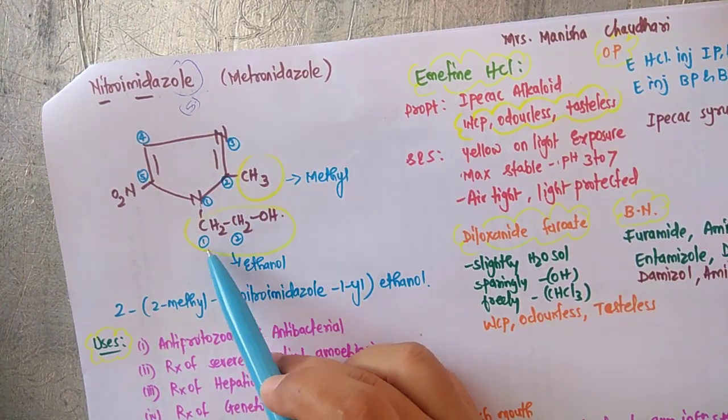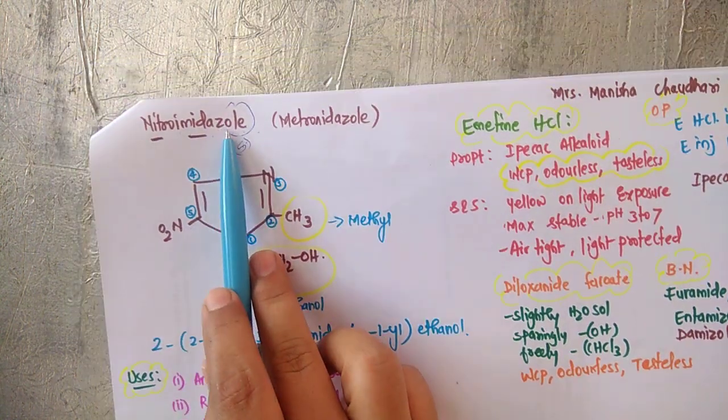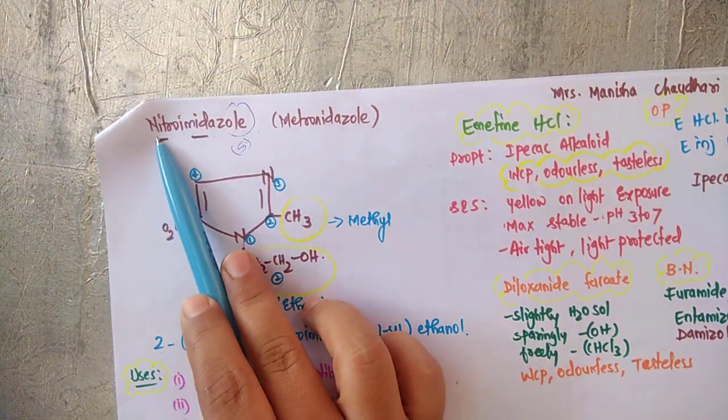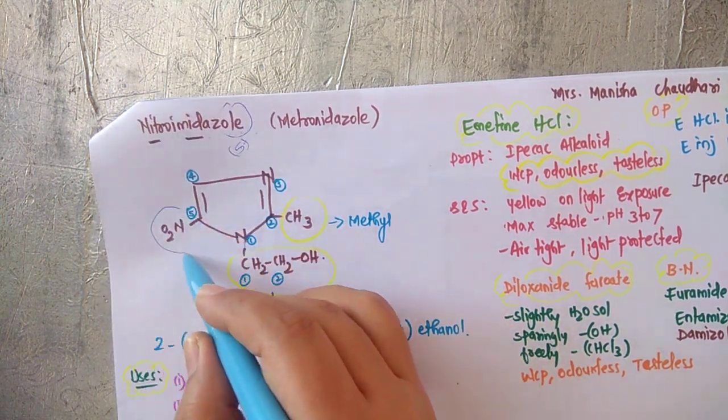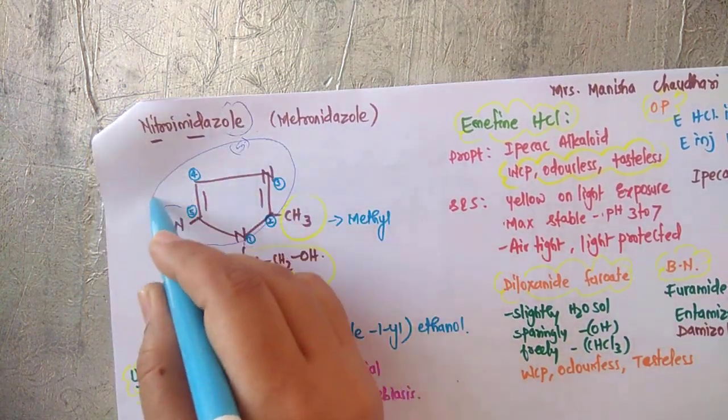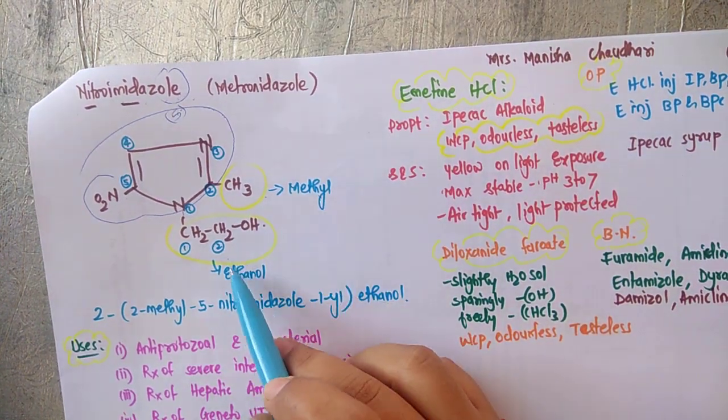Since it belongs to the class nitroimidazole, nitro is a part of the class name. The substituents are methyl and ethanol, CH2CH2OH.